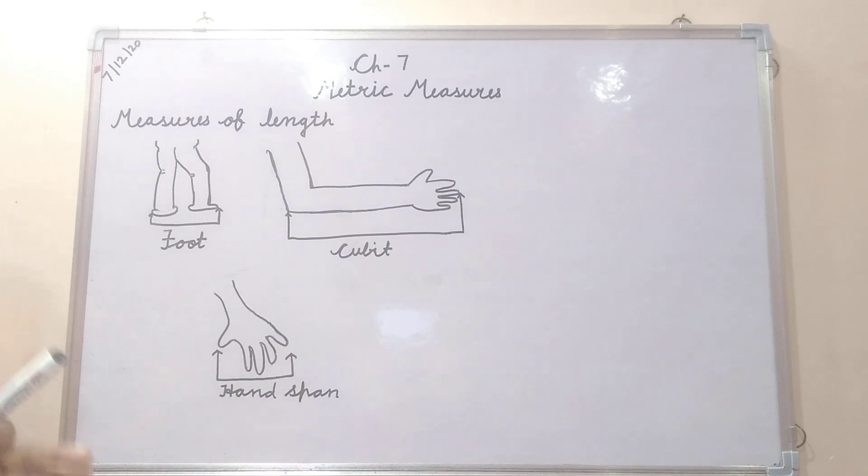That means here you can see the difference between the measuring of the length of this room. That is called the non-standard unit of measuring. That means if the same number is not coming, that means that is called non-standard unit.